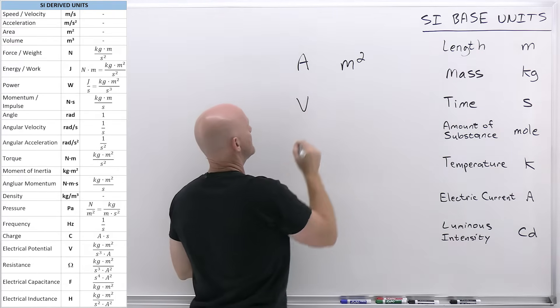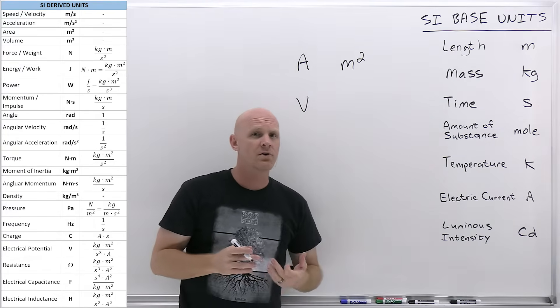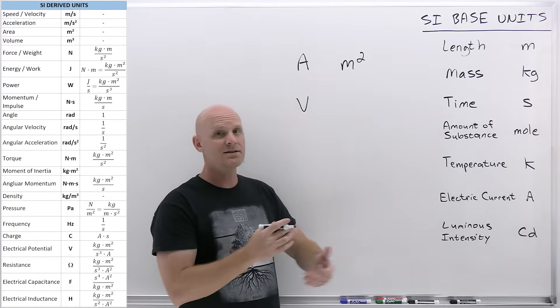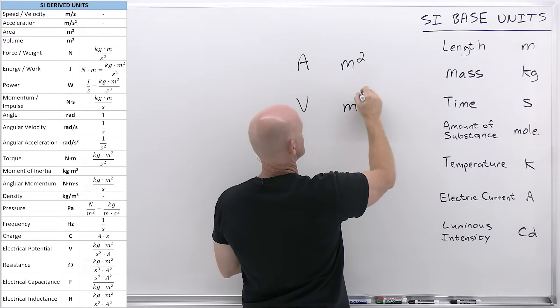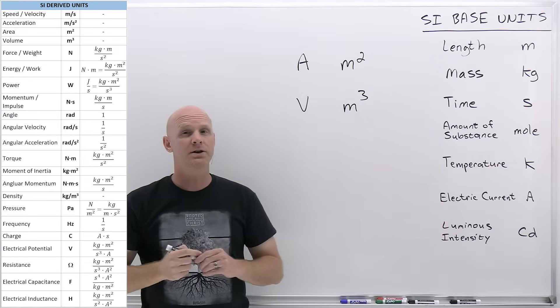Same thing with volume. You can look at the volume of a cube as length times width times height, and it's going to be meters times meters times meters. And so the SI unit, another derived unit, is going to be meters cubed.